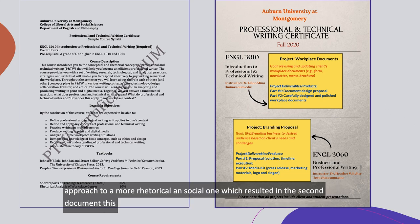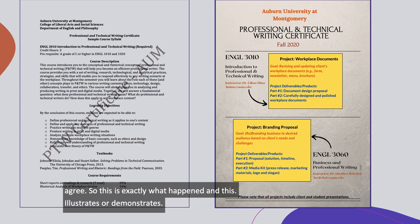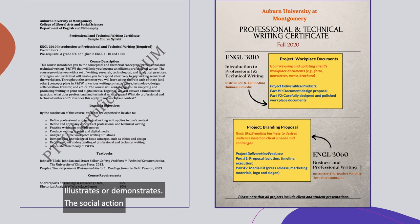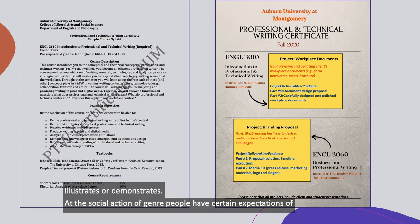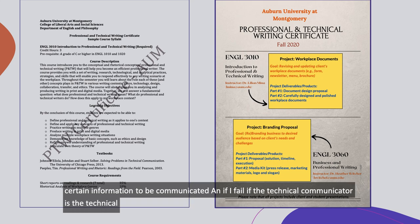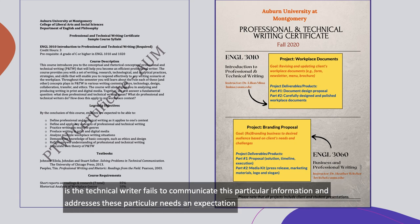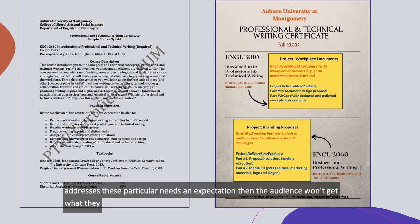The second document — the one on the right — is much better. This illustrates the social action of genre: people have certain expectations and need certain information to be communicated. If the technical communicator fails to communicate that particular information and address those particular needs and expectations, the audience won't get what they wanted from the document in the first place.